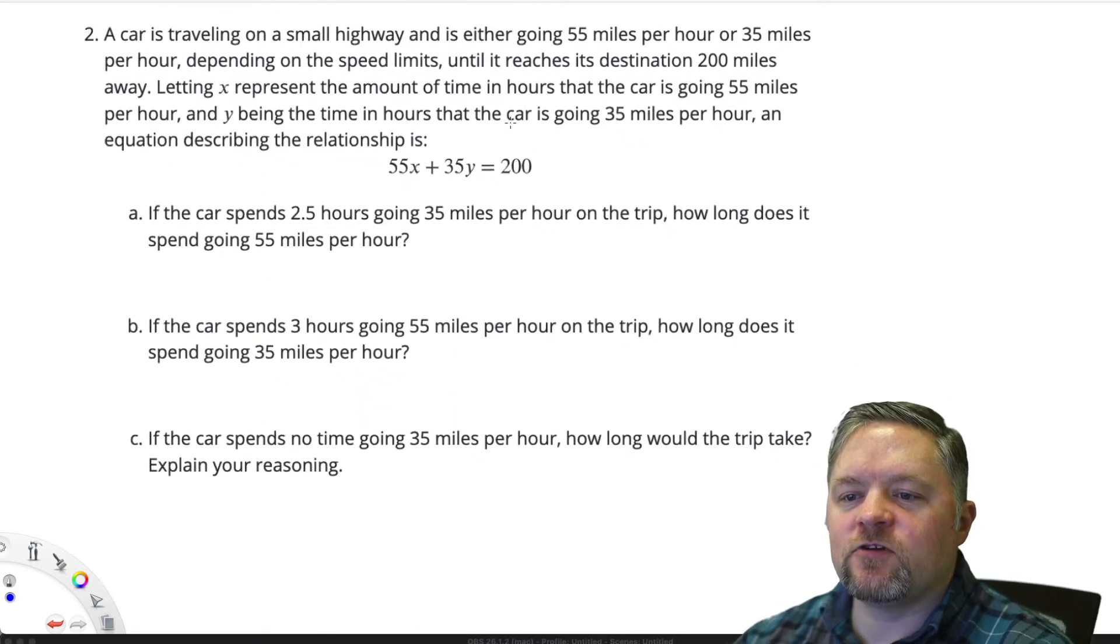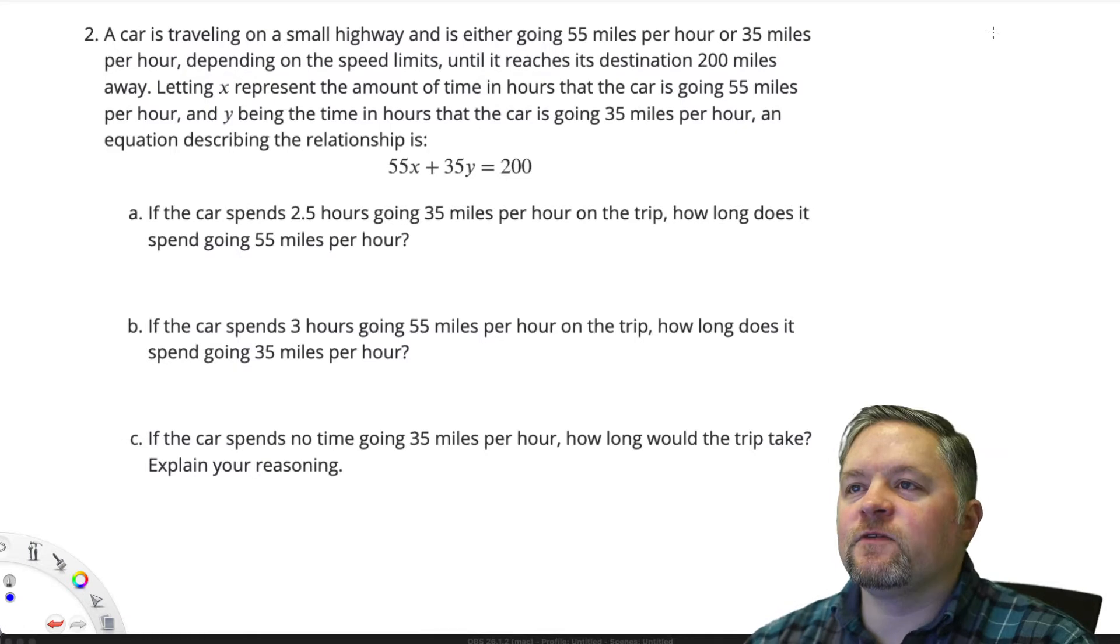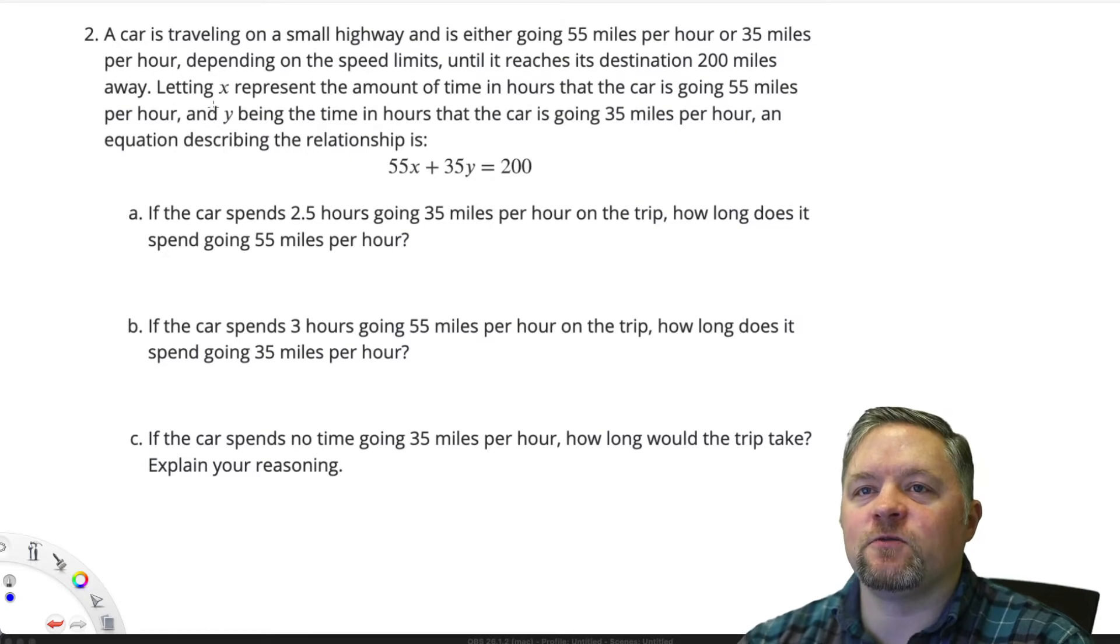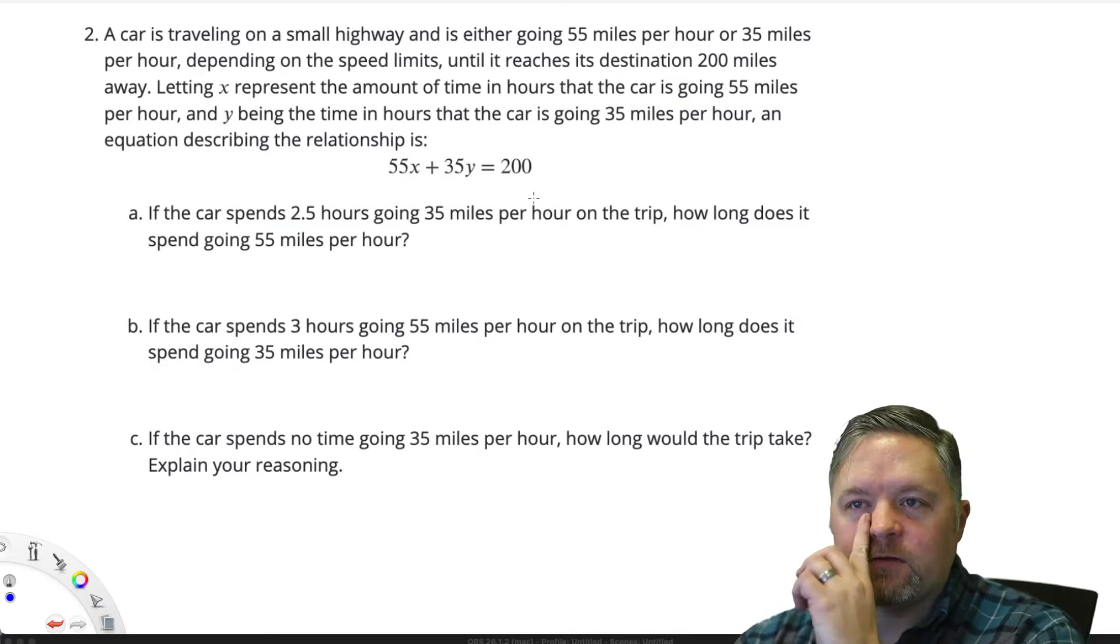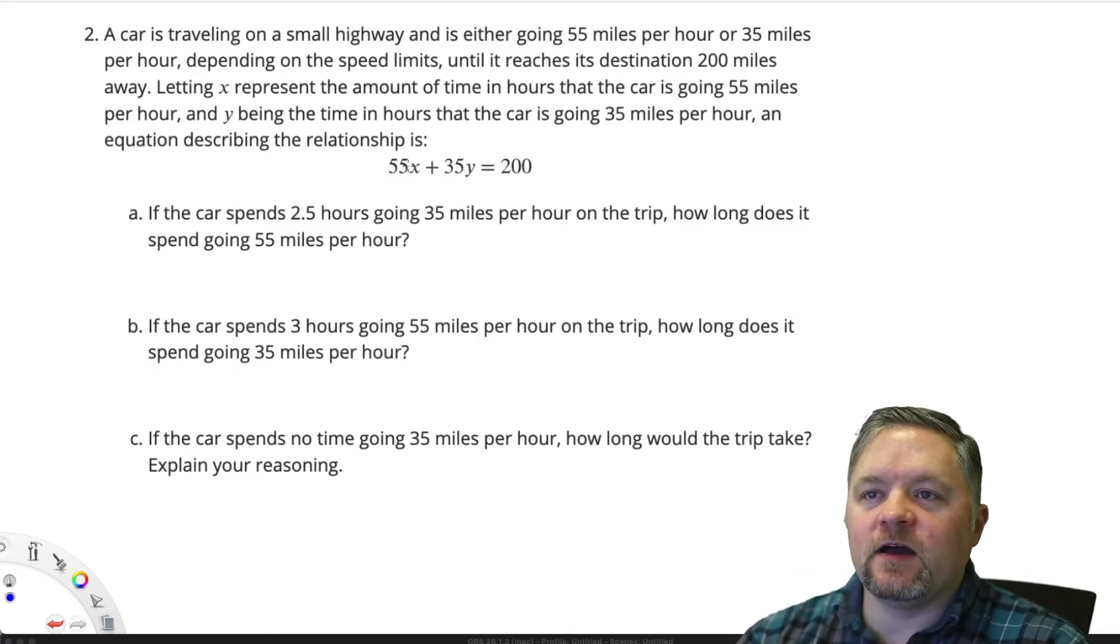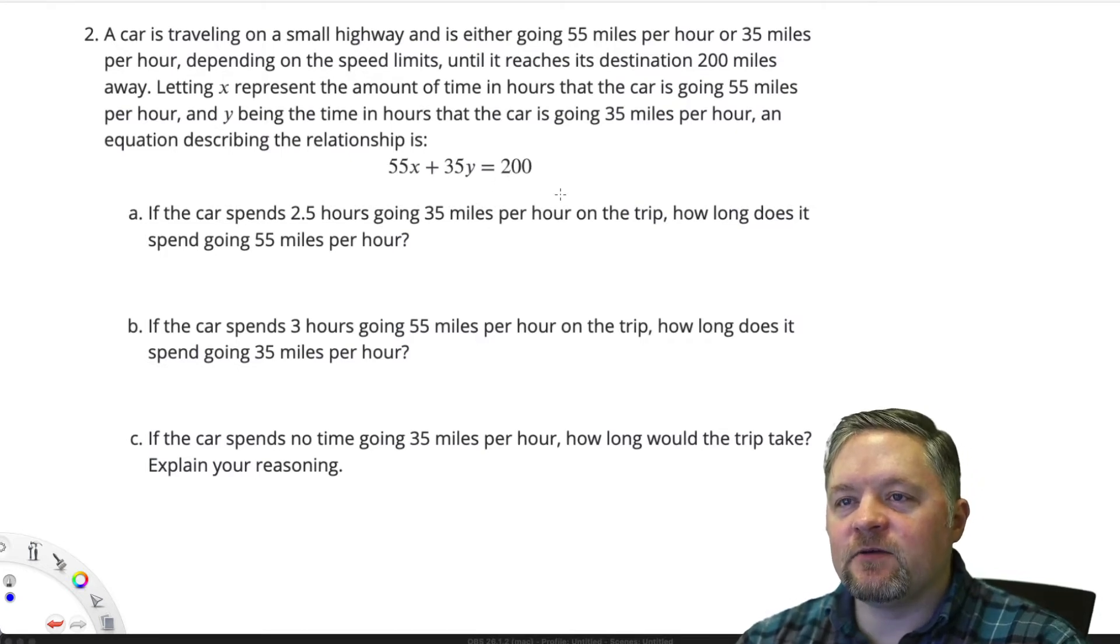A car is traveling on a small highway and is either going 55 miles per hour or 35 miles per hour, depending on the speed limits, until it reaches its destination 200 miles away. Letting x represent the amount of time in hours the car is going 55 miles per hour and y being the time in hours that the car is going 35 miles per hour. An equation describing the relationship is 55x plus 35y equals 200.